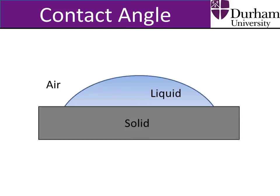The contact angle of a droplet is measured by taking the points on the droplet that are simultaneously in contact with the solid, liquid and air, and drawing a tangent to the droplet curve at these points. The contact angle is then the angle between this tangent and the solid surface.